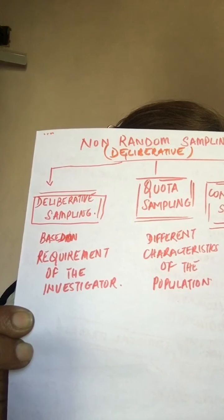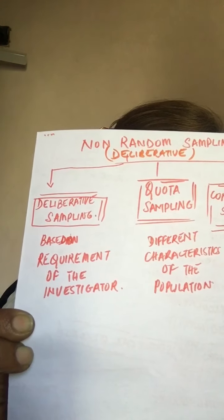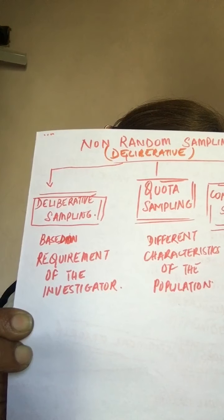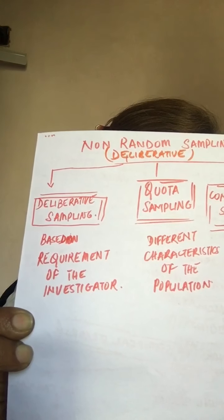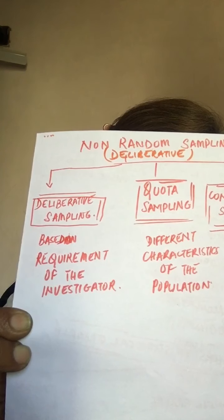For example, if a sample of 10 students is to be taken from a population of 100 students who use a particular brand of pen, the investigator will select only those students whom he considers true representatives of the population. The selection is based upon the investigator's judgment.